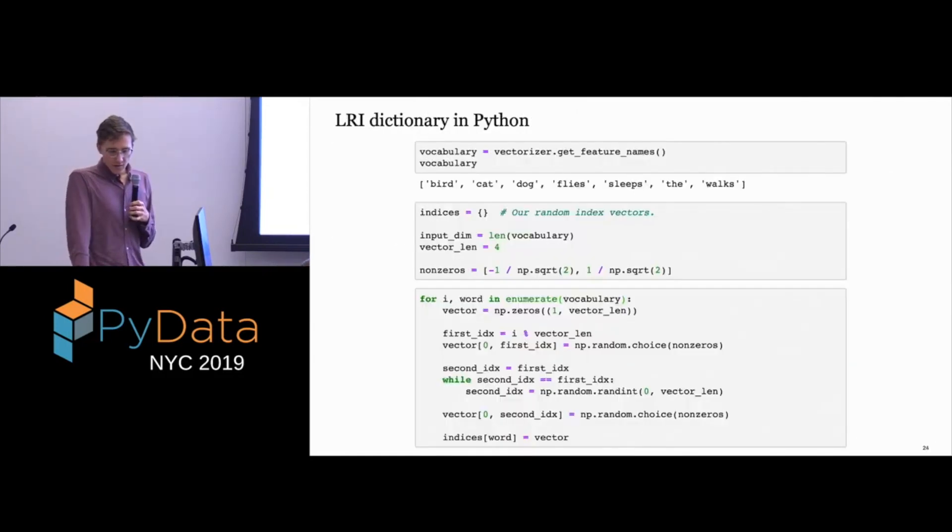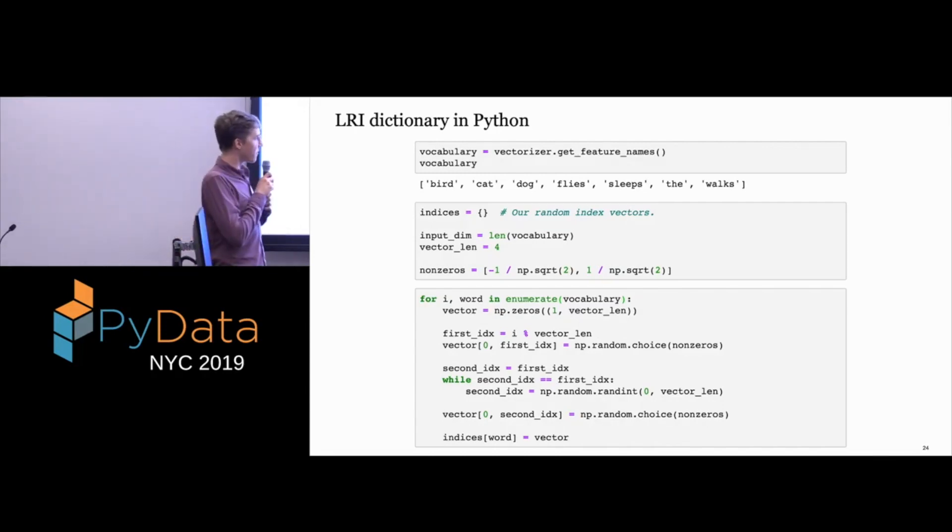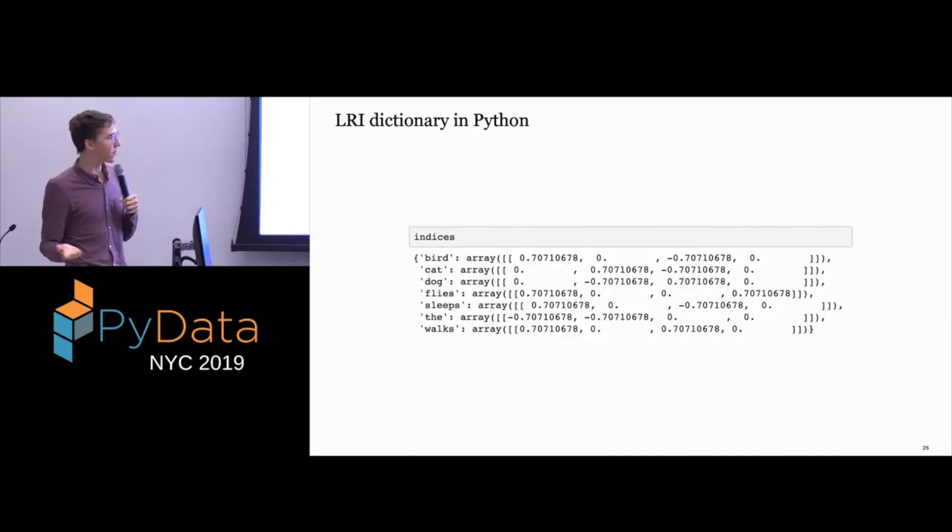I think that's the whole thing. So this is Python code to actually build this dictionary. Again, the same example that we've been looking at. We have our feature names from our vectorizer. We build this dictionary. We'll set our vectors to have two non-zero elements that are being pulled from this non-zero element set. And then for every word in our vocabulary, we'll just choose the first index deterministically, which is just whatever index that was in the vocabulary mod of how long the vector is. And then the next index will just be some random index in the vector that isn't the original one that we picked. And that's it. This is an example resulting index set. You can see that everything is one over the square root of two. So we all know how to do that in our head, right? And it's either positive or negative, that value.